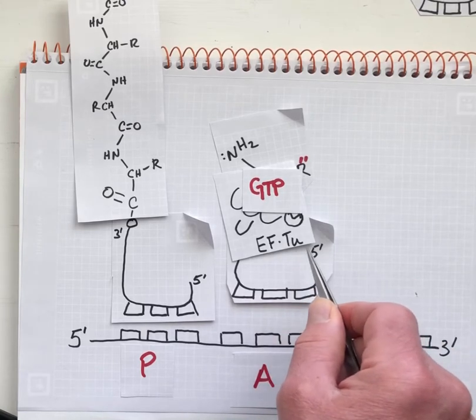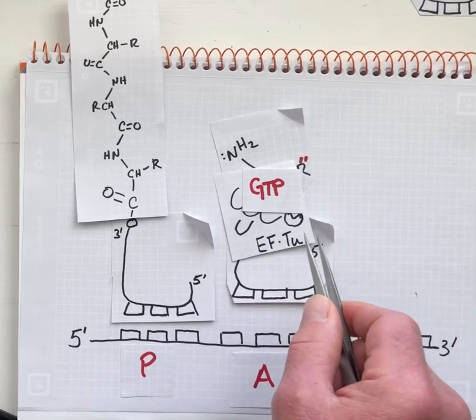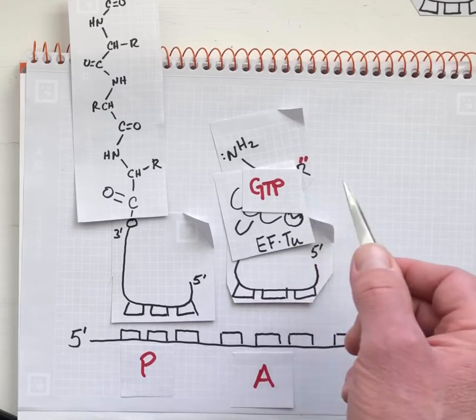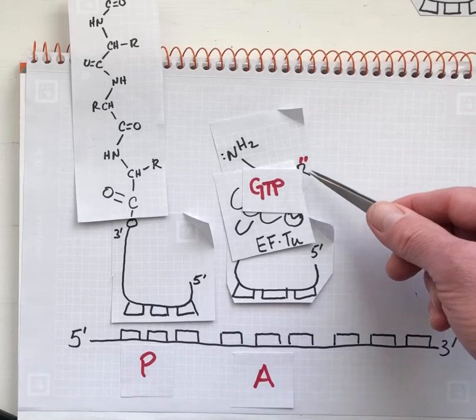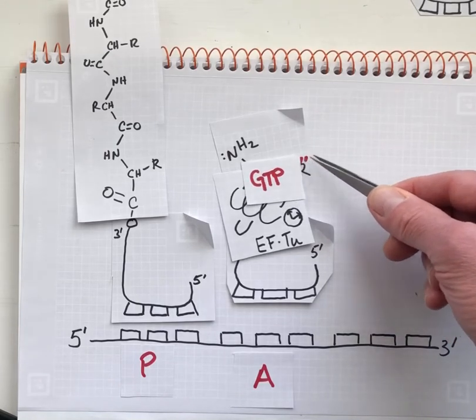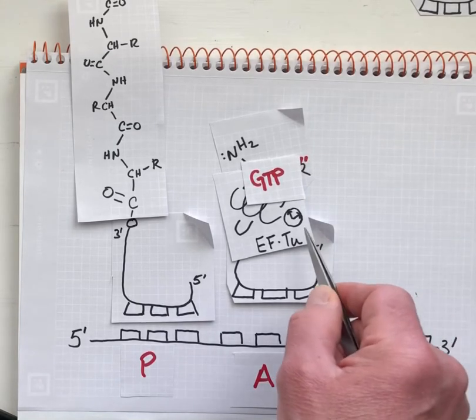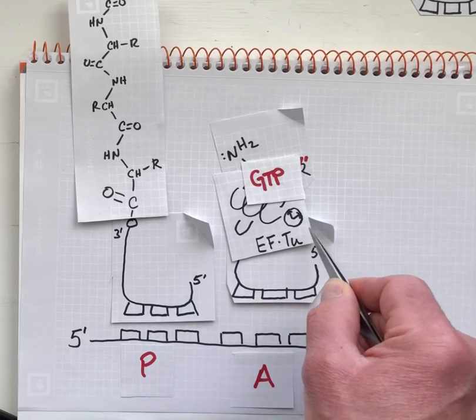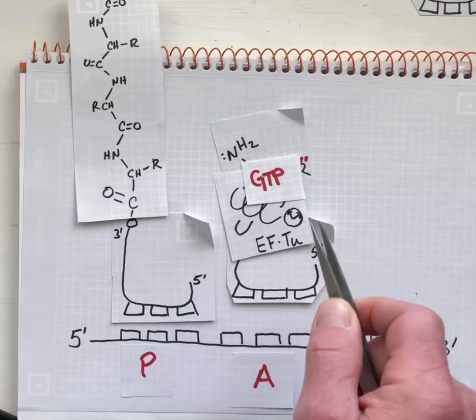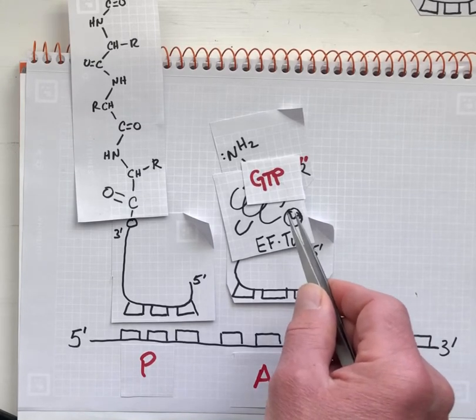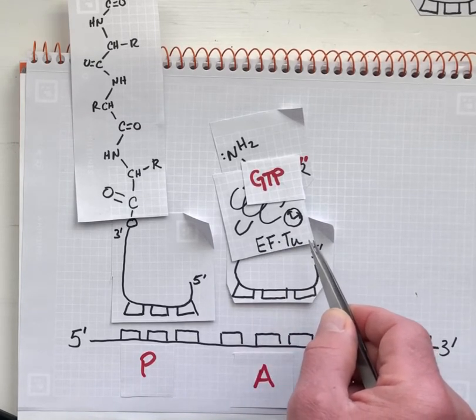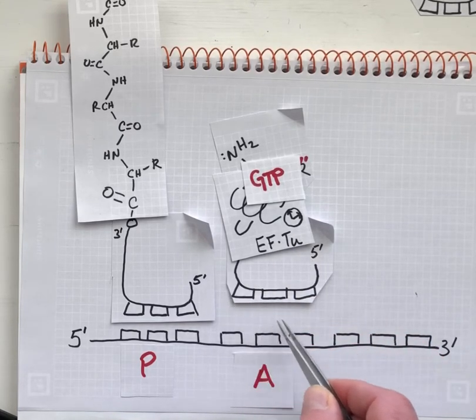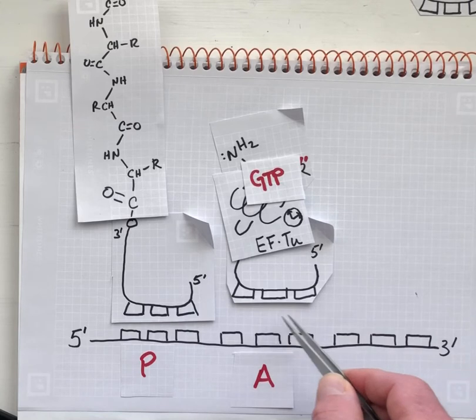Elongation factor Tu is a G protein. It has the P nucleotide structural motif, and it's able to hydrolyze GTP into GDP and inorganic phosphate. I'm highlighting the elongation factor Tu with this clock icon, because its purpose is to allow a certain amount of time for this complex to leave the A site.